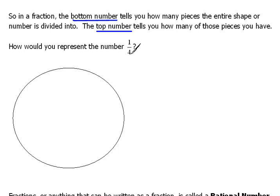So remember, the bottom number tells you how many pieces the entire shape or number is divided into. So I would have to first of all divide my shape into four equal parts. So here I would have one, two, three, four equal parts.